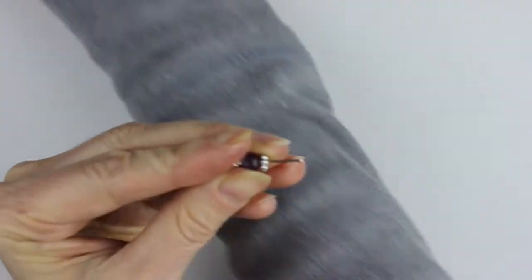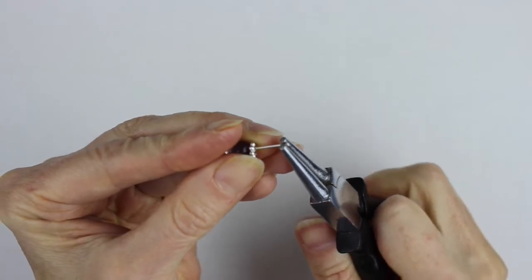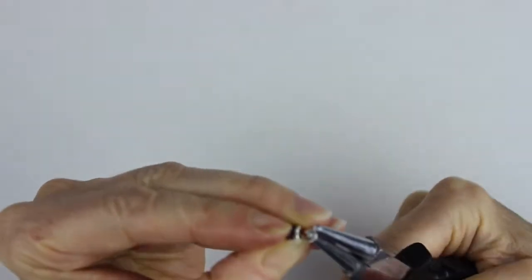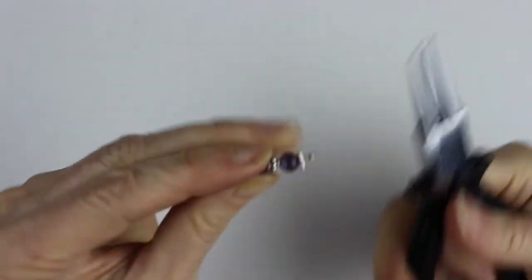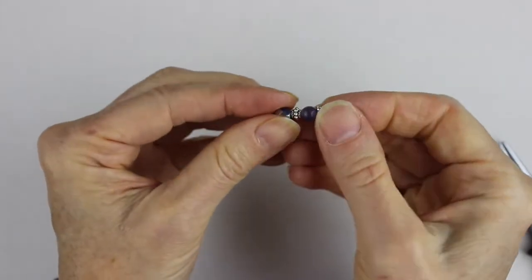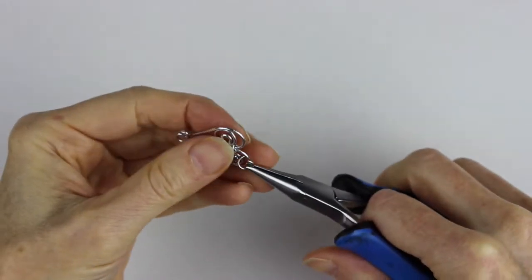Then we're just going to bend it back and around like that. So there we have our first little pin, and we're going to make three of those.